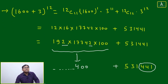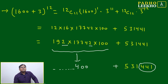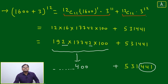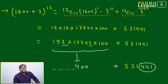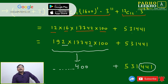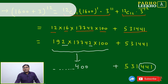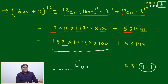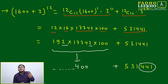Now we come back to the original expansion and consider only the last two terms: 12C11 · 1600^1 · 3^11 + 12C12 · 3^12. We have discarded all other terms since they do not affect the last three digits. 12C11 = 12, and 3^11 = 177147. 12C12 = 1, and 3^12 = 531441.